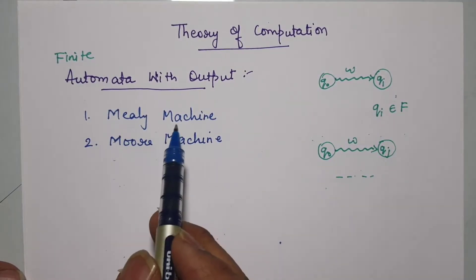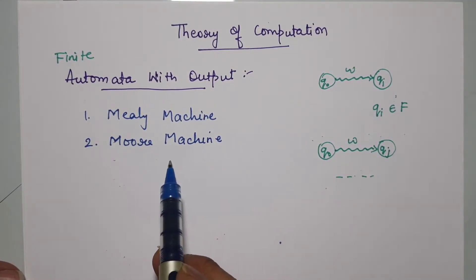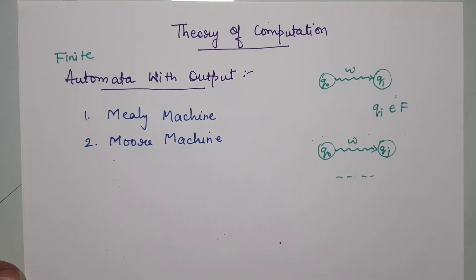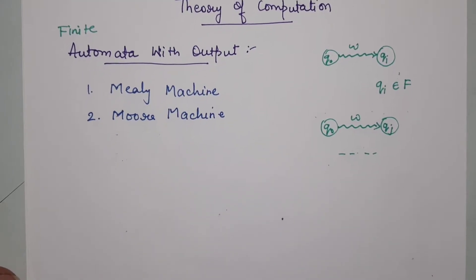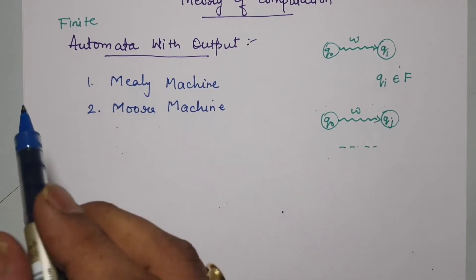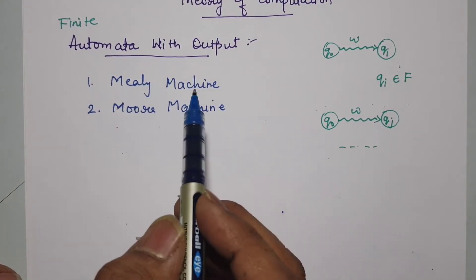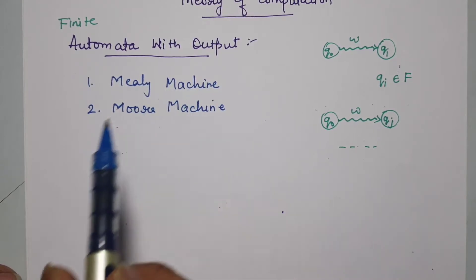The two types are Mealy machine and Moore machine. We are going to see Moore machine in detail later; first let us start with Mealy machine.